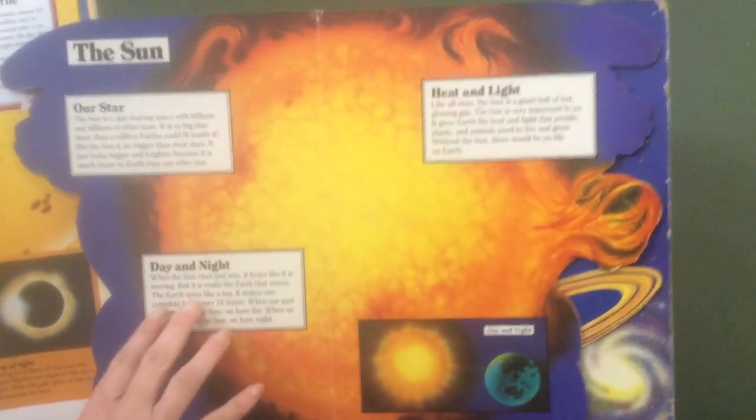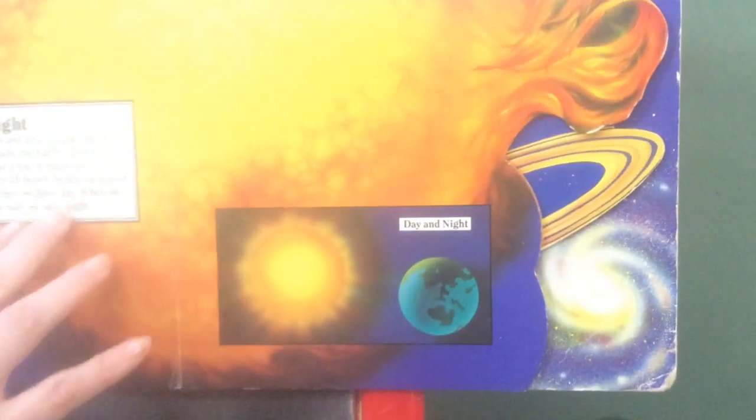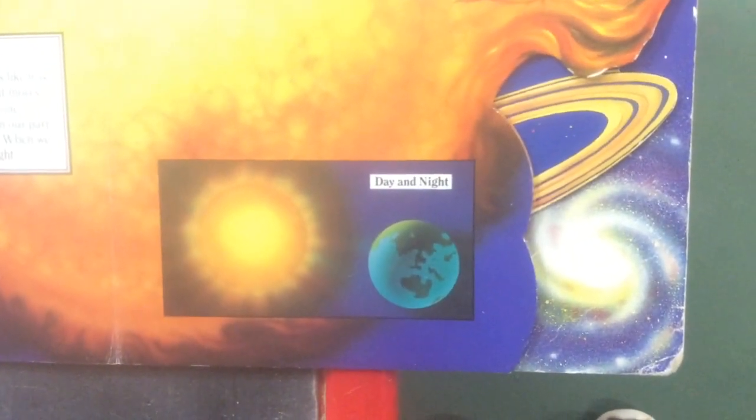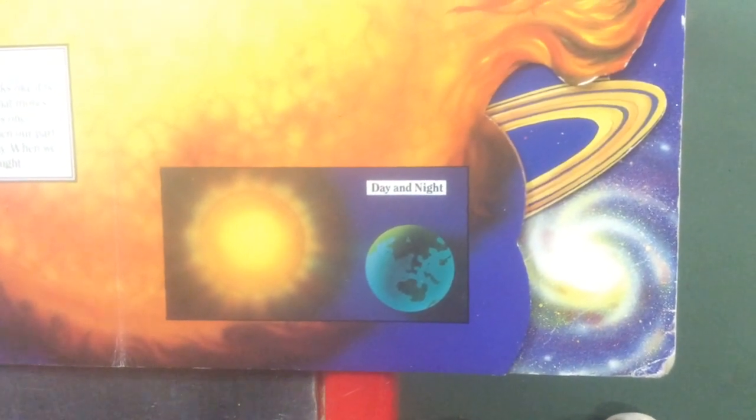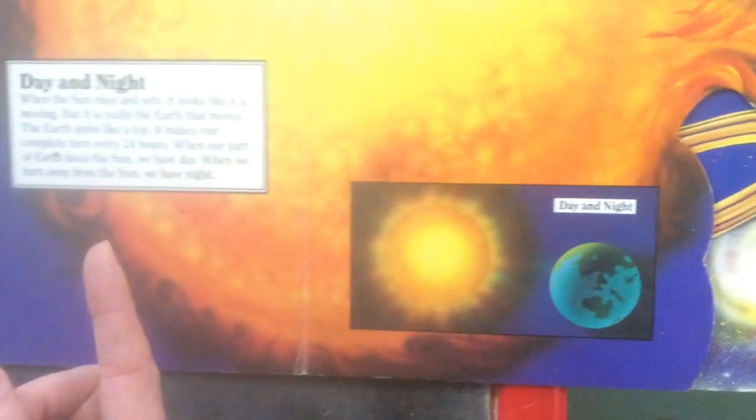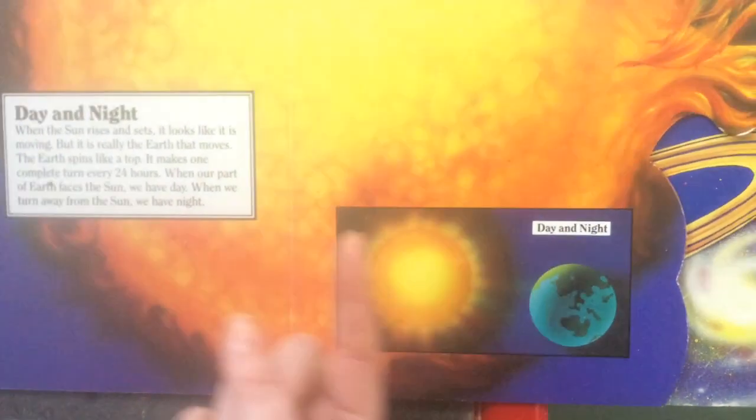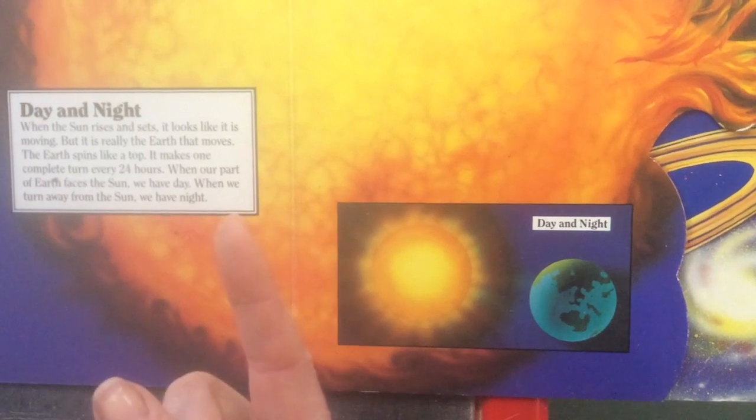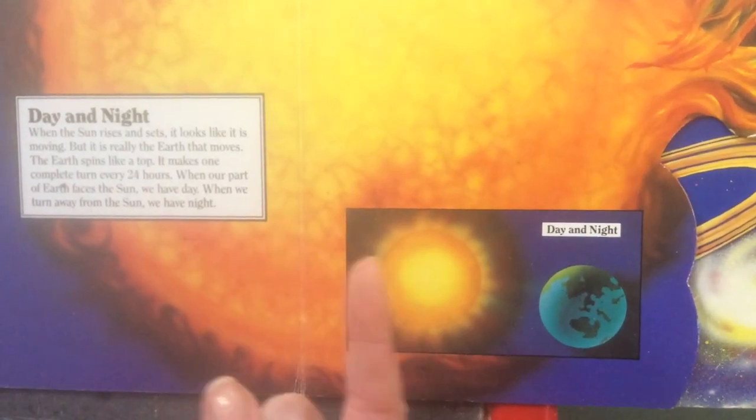And then day and night. When the sun rises and sets, it looks like it is moving. But it's really the earth that moves. The earth spins like a top and it makes one complete turn every 24 hours. So the earth spins on its axis in 24 hours. That's one day.